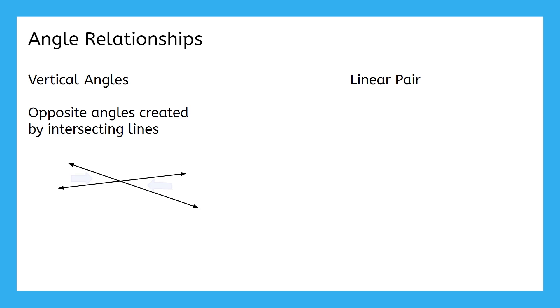The last two relationships we're going to cover in this lesson are vertical angles and linear pairs. Vertical angles are opposite angles created by intersecting lines. Think about two lines crossing each other. Which angles here would you say are opposite to each other?